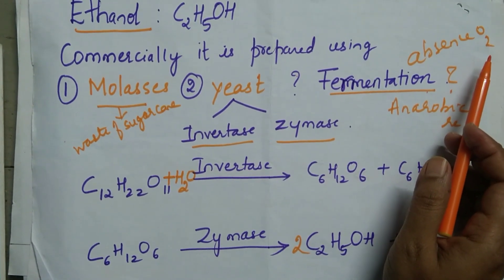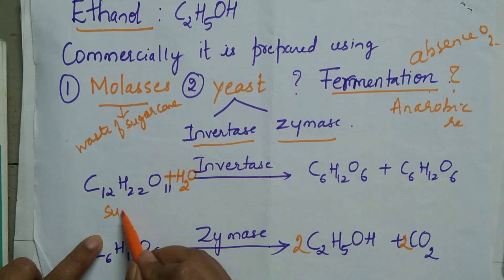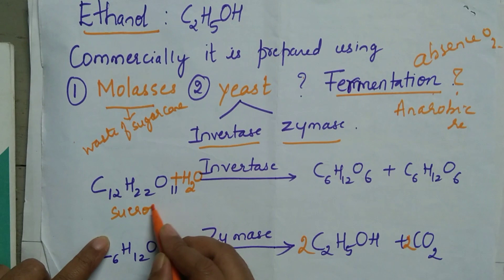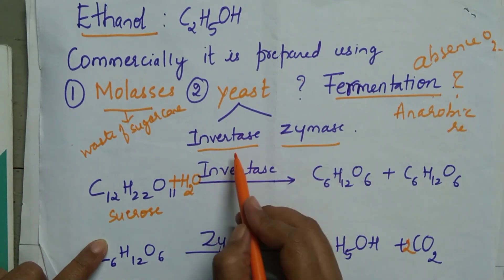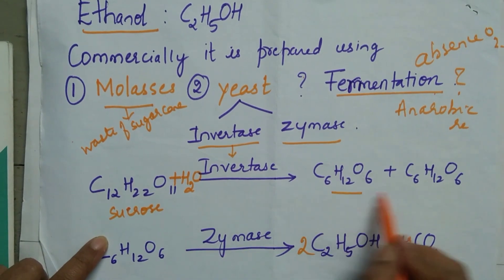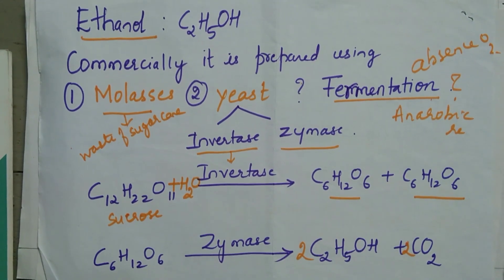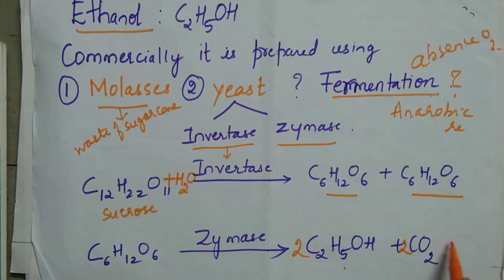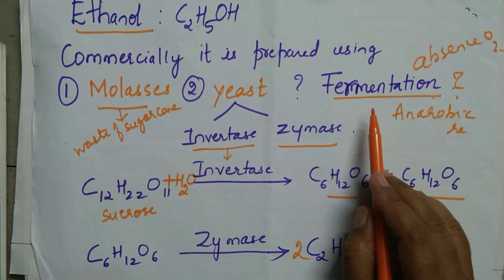The waste of sugarcane, molasses, contains sucrose (C₁₂H₂₂O₁₁). The invertase enzyme present in yeast breaks down sucrose into two molecules of glucose (C₆H₁₂O₆). This glucose is then converted into ethyl alcohol in the presence of the enzyme zymase, with liberation of carbon dioxide. This whole process is called fermentation.